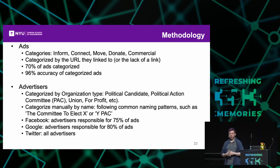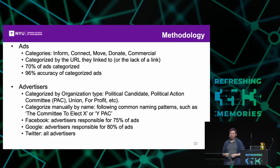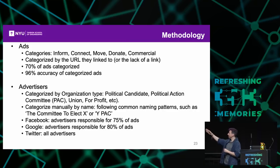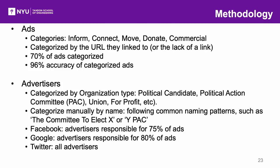For the top advertisers—the top 75% of Facebook advertisers and top 80% of Google advertisers in terms of money spent—we went in and manually categorized the type of organization: was it a political candidate, a political action committee (PAC), a union, a for-profit operation, a non-profit operation, and so on. We wrote some regular expressions that got us most of the way there, and for the ones we couldn't automatically classify, we did it manually. Since Twitter had so few advertisers, we just did those all manually.